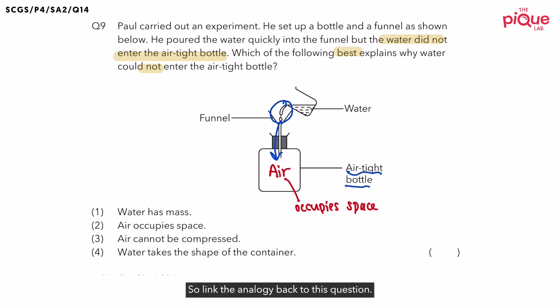So link the analogy back to this question. Air, which is like the friend, is already occupying space in the bottle. So do you think there is still any more space for the water to enter the bottle now? No. So with that, let's quickly write down the annotation first. So this is the reason why the water could not enter the airtight bottle. Simply because there is no more space for the water to occupy.